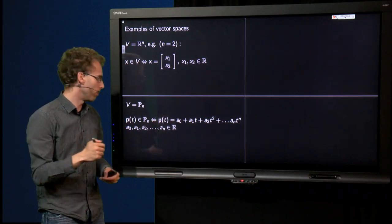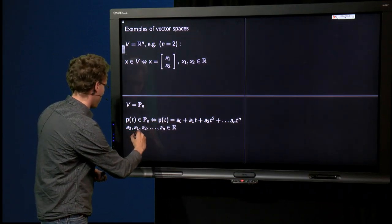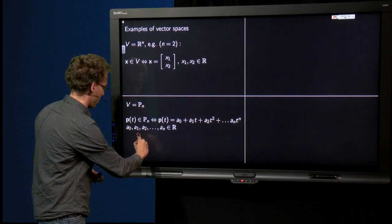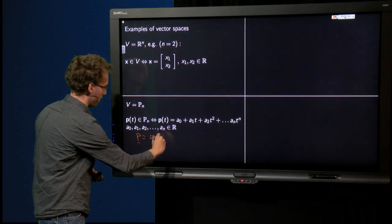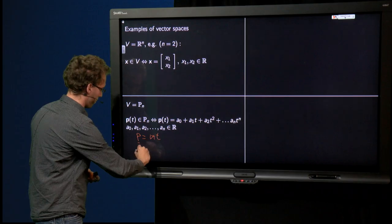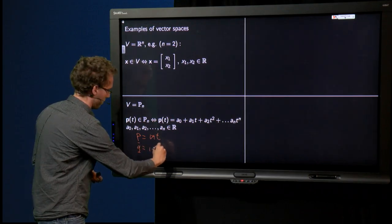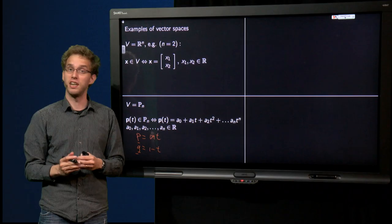If we have, for example, in P1, we could have P equals 1 plus t and Q equals 1 minus t. Two polynomials of degree 1.